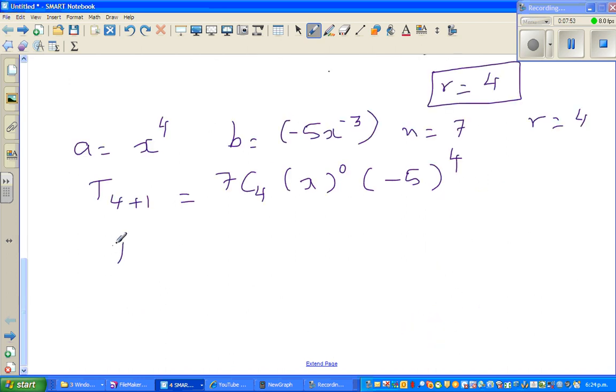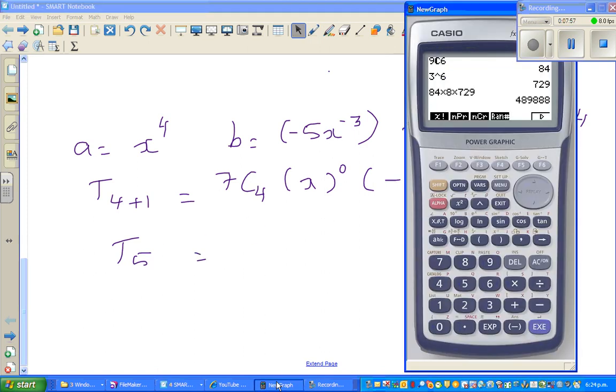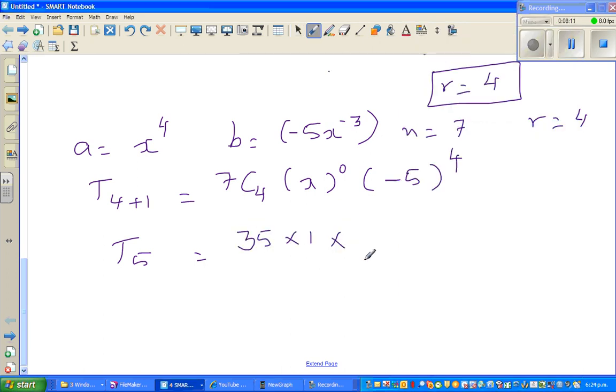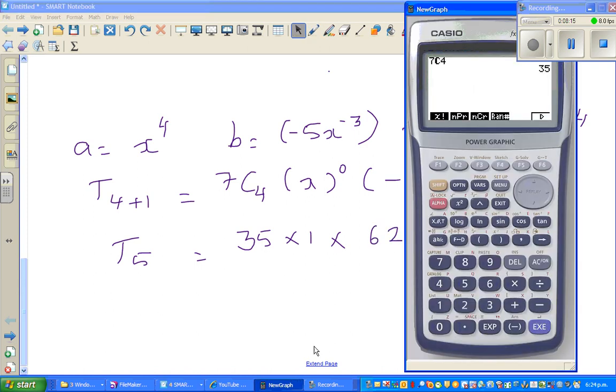So 7, this is nothing but the 5th term, T5 is 7C4. So this is my calculator. So you've got 7C4, which is 35. So this is 35 times 1, times, this is 625. You can use your calculator. Bracket, bracket, minus 5 to the power 4, gives you 625.